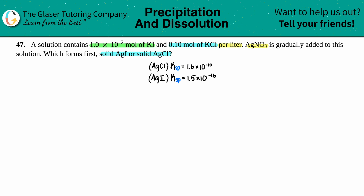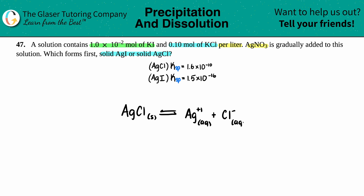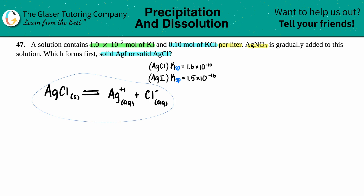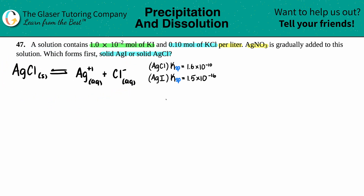Let's write out the two balanced equilibrium equations. First, AgCl as a solid, double arrow for equilibrium, breaks down into Ag⁺ (aqueous) and Cl⁻. Silver is always a +1 charge — it's a transition metal with only one charge — and chloride is Cl⁻. Already balanced. Now for AgI: solid, double arrow, breaks down into Ag⁺ (aqueous) and I⁻. Already balanced.